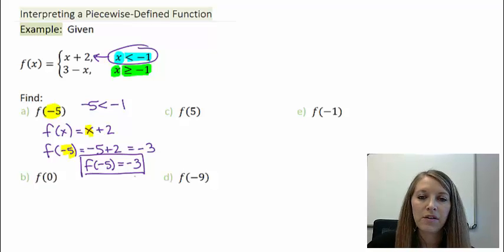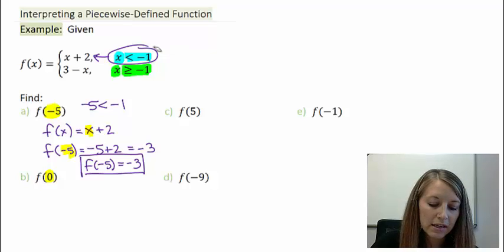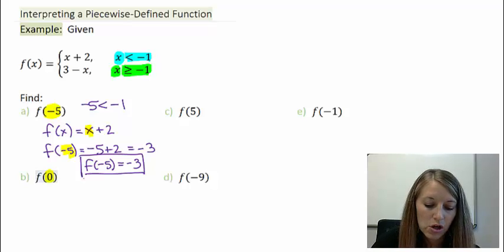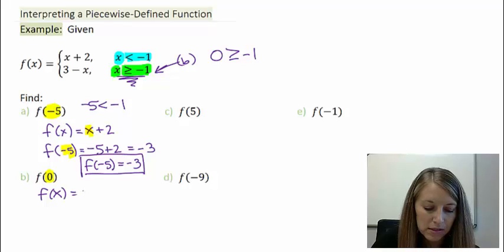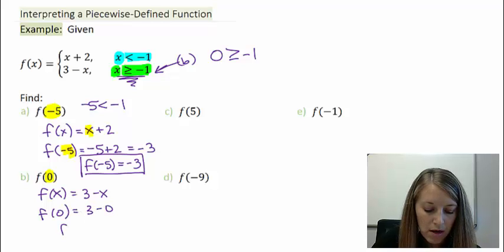Remember: step one is to figure out which interval you correspond to, and step two is to plug into that piece only. For part B, I want f of 0. Is 0 less than negative 1? No. Is 0 greater than or equal to negative 1? Yes. So I use the second piece, 3 minus x. Therefore f of 0 equals 3 minus 0, which equals 3.